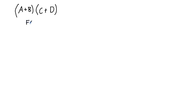Basically, you can use the acronym FOIL, which stands for first, outside, inside, last — meaning multiply the first terms in the brackets, then multiply the outside terms of the brackets, then multiply the inside terms, and then finally multiply the last terms.